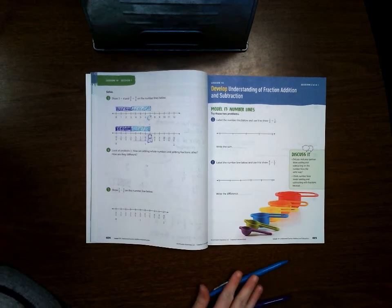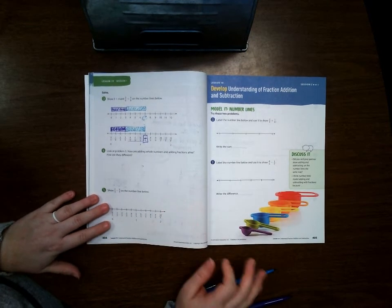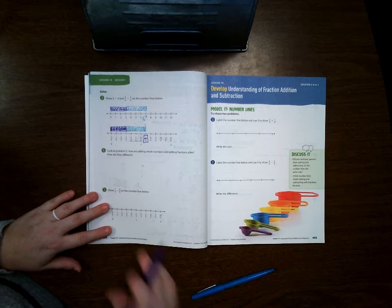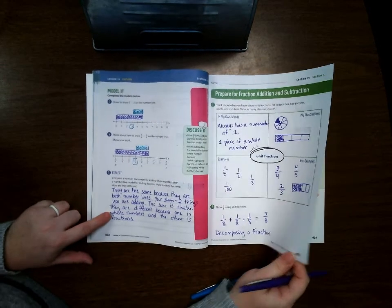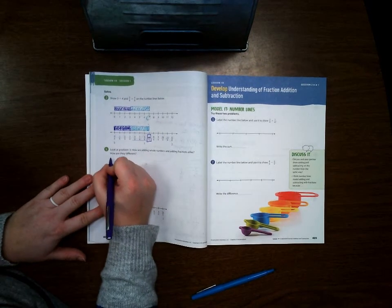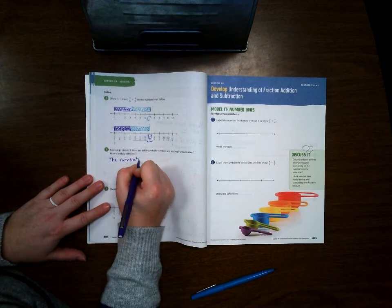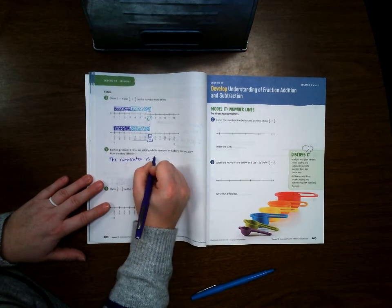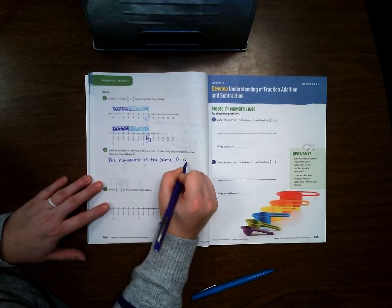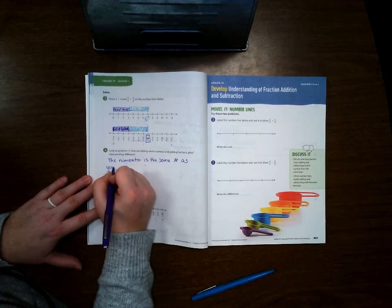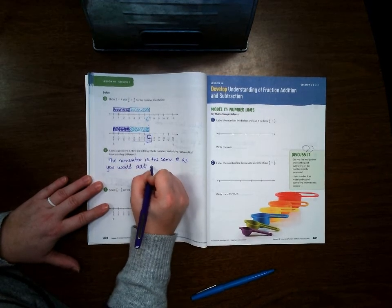Now it says, look at problem 3: how are adding whole numbers and adding fractions alike, and how are they different? Well, this is the same as this answer right here. And the numerator is the same number as you would add whole numbers.